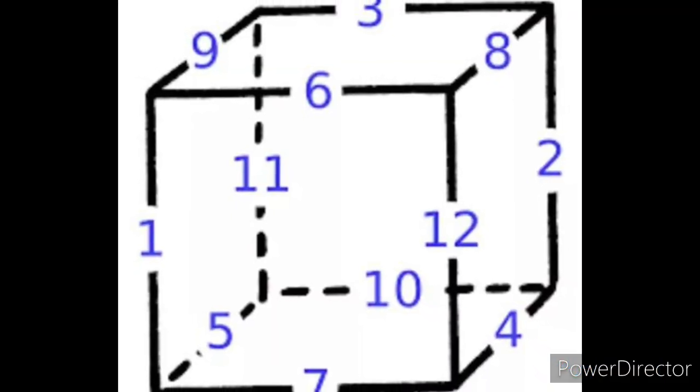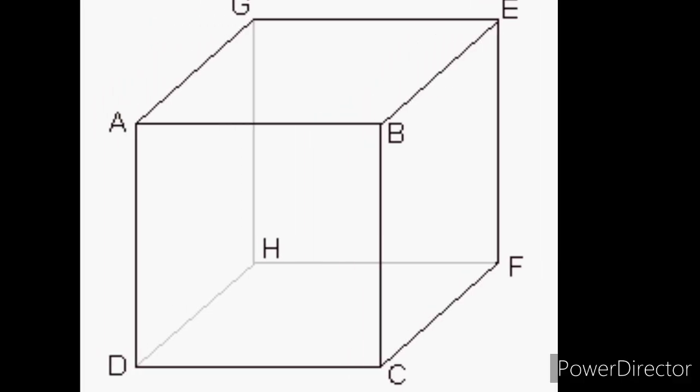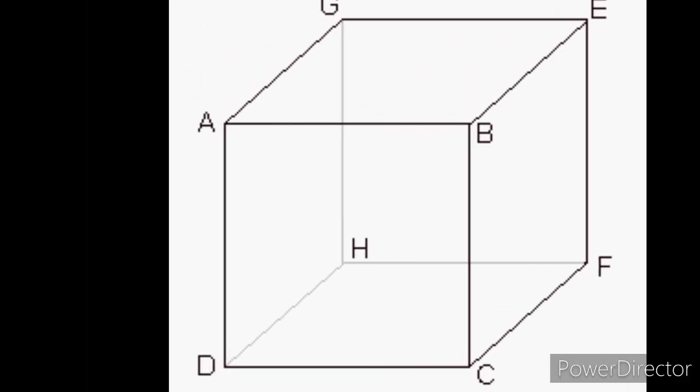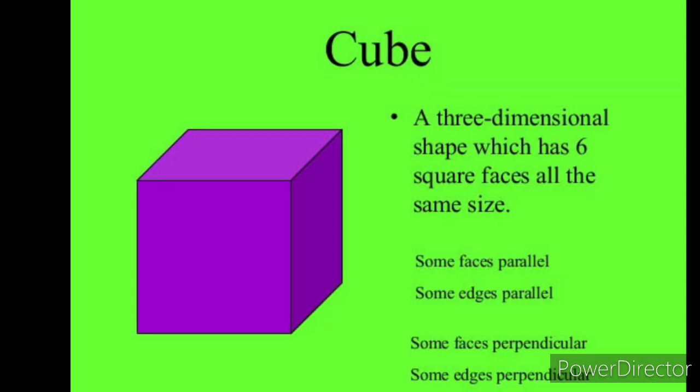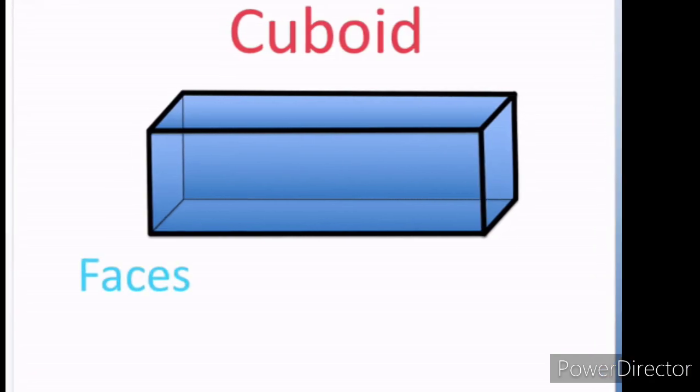So here you can see there are totally 12 edges, already marked. And how many corners? Eight corners. So cube has 8 corners and 12 edges. Next, coming to cuboid.